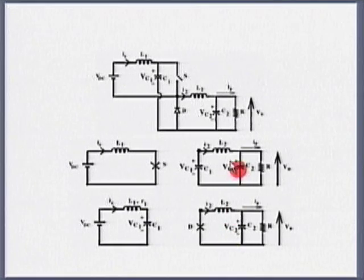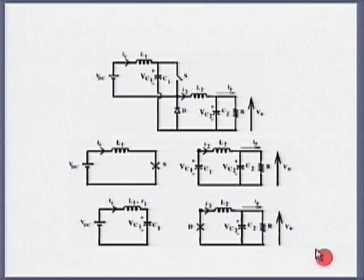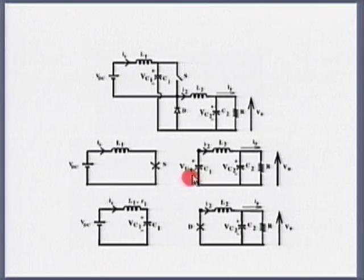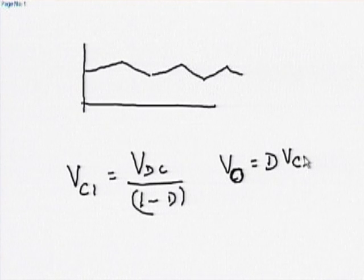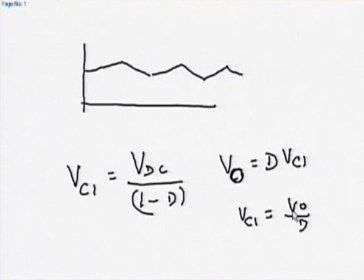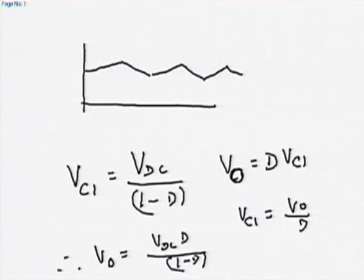The output stage looks like a buck converter. When I close the switch, VC1 supplies power to this circuit. The relationship between VC1 and V0 is: V0 equals D times VC1. Substituting, I get V0 equals Vdc times D divided by 1 minus D — which is nothing but the buck-boost converter transfer function.